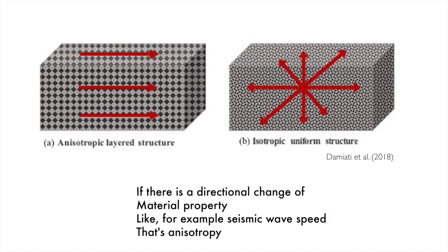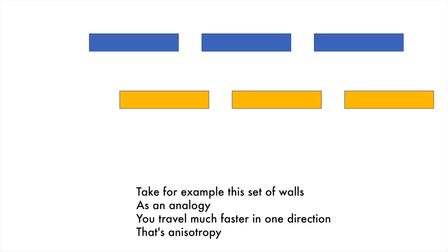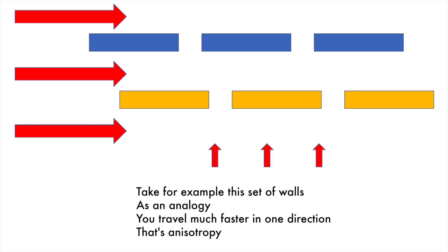If there is a directional change of material property, like, for example, seismic wave speed, that's anisotropy. Take, for example, this set of waltzes as an analogy — you travel much faster in one direction. That's anisotropy.